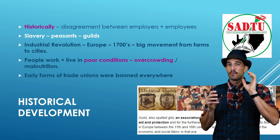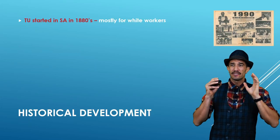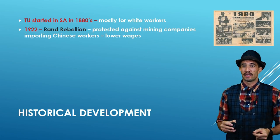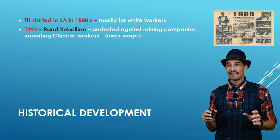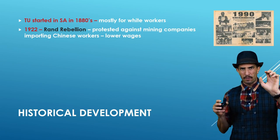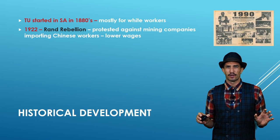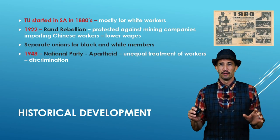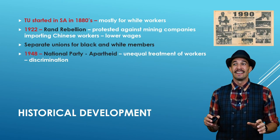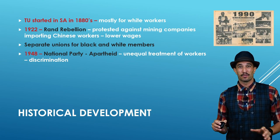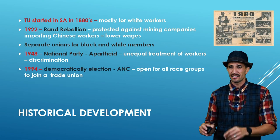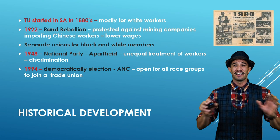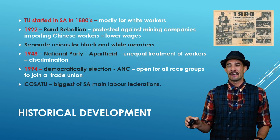Workers had no one to fight for them, and trade unions were banned because employers felt threatened and feared losing control. When trade unions eventually started in South Africa in 1818, people began to be empowered. In 1922, the Rand Rebellion started, with workers going against mining companies to stop exploitation and demand fair wages. Then in 1948, the National Party implemented apartheid, where discrimination was really enforced.